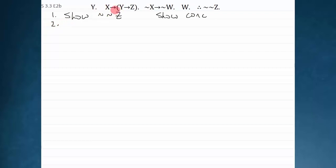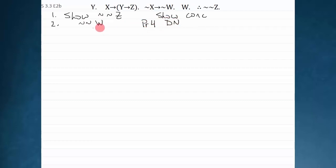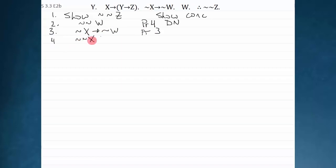On line two I start to combine things. I look at W and double negate it, taking premise four and double negating it to get not W. Why? Because I see that's the negation of the consequent here. So now I write out not X arrow not W and say that's premise three. I run a modus tollens — lines two, three, MT — and that results in not not X.